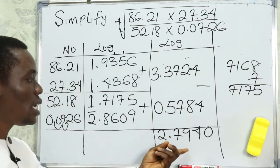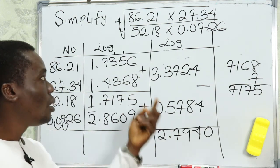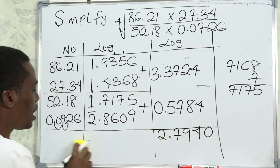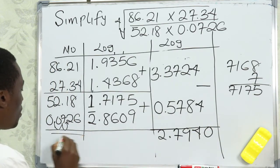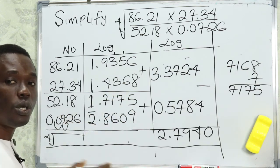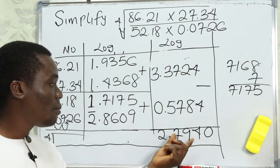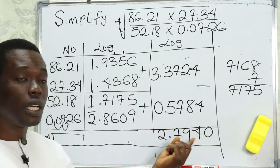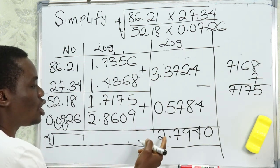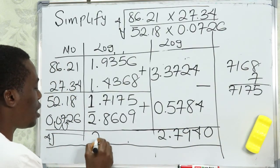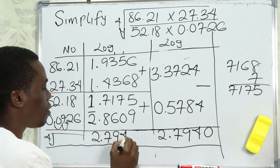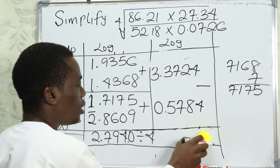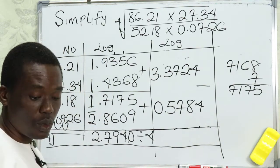Having gotten 2.7940, remember we are looking for the fourth root of the whole fraction. When you have a fourth root, you divide the log value by 4. When you have a square, you multiply by that value. So we divide 2.7940 by 4 to get the true value we are looking for.